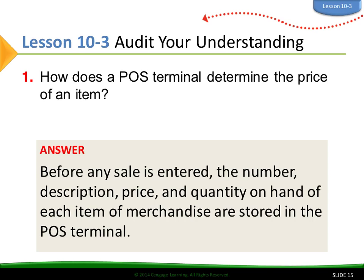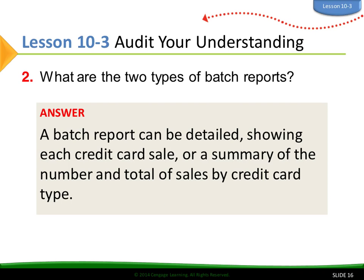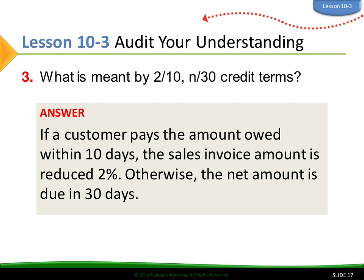How does a POS terminal determine the price of an item? Before any sale is entered, the number, description, price, and quantity on hand of each item of merchandise are stored in the POS terminal. What are the two types of batch reports? A batch report can be detailed, showing each credit card sale individually, or a summary of the number and total of sales by credit card type. What is meant by 2/10, net 30 credit terms? If a customer pays the amount owed within 10 days, the sales invoice amount is reduced 2%; otherwise, the full net amount is due in 30 days.